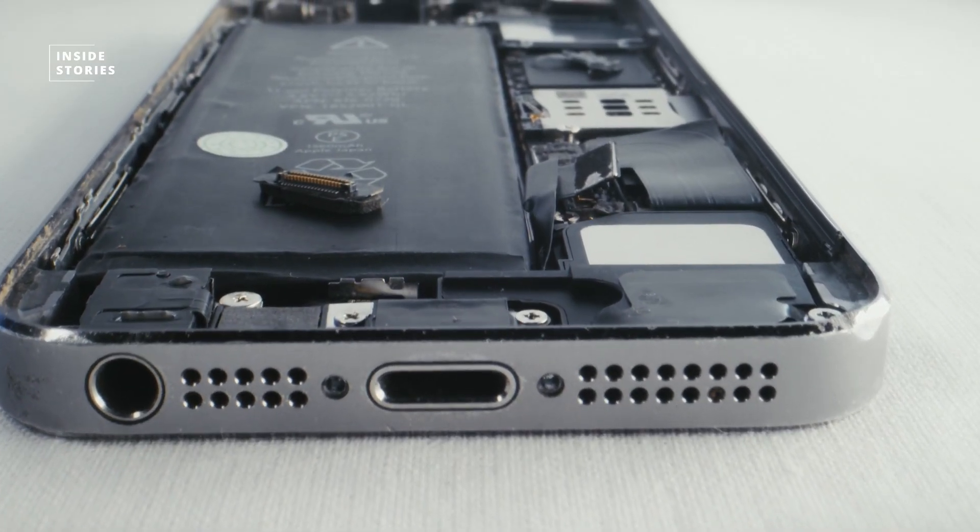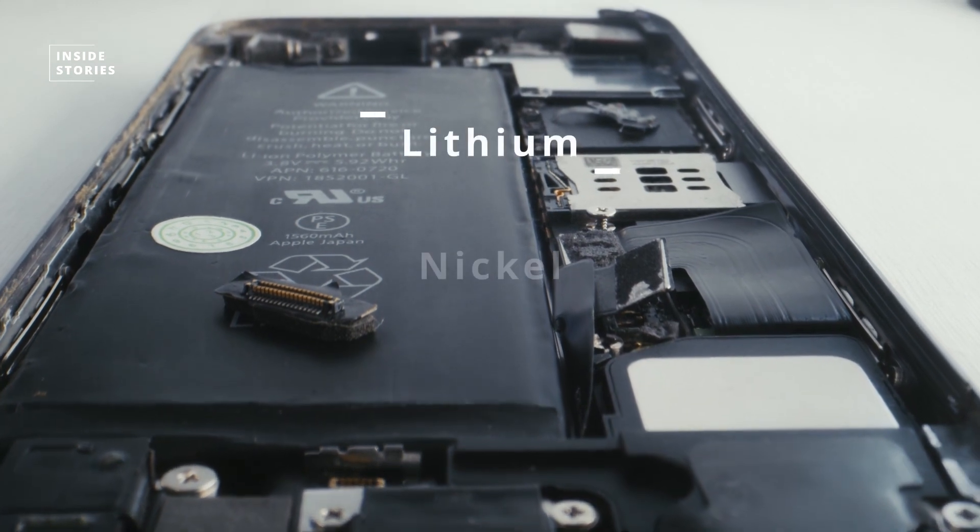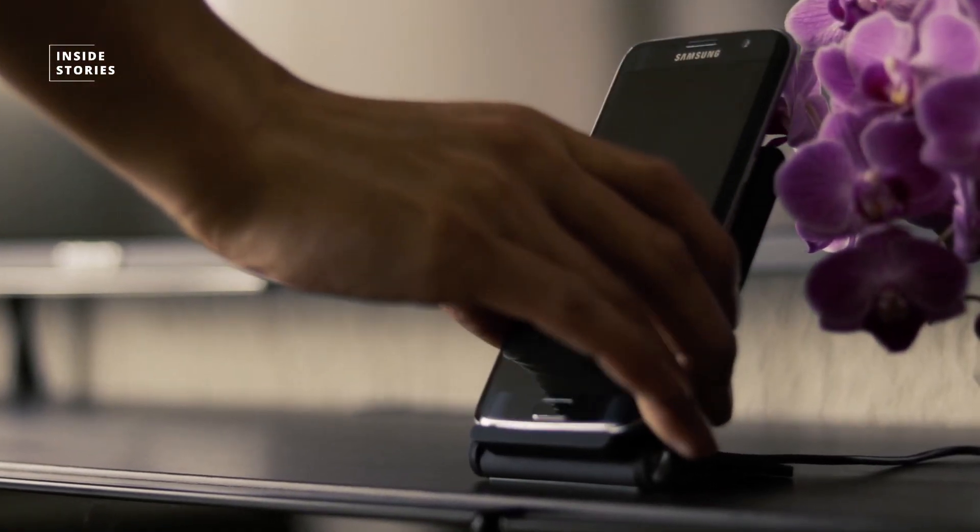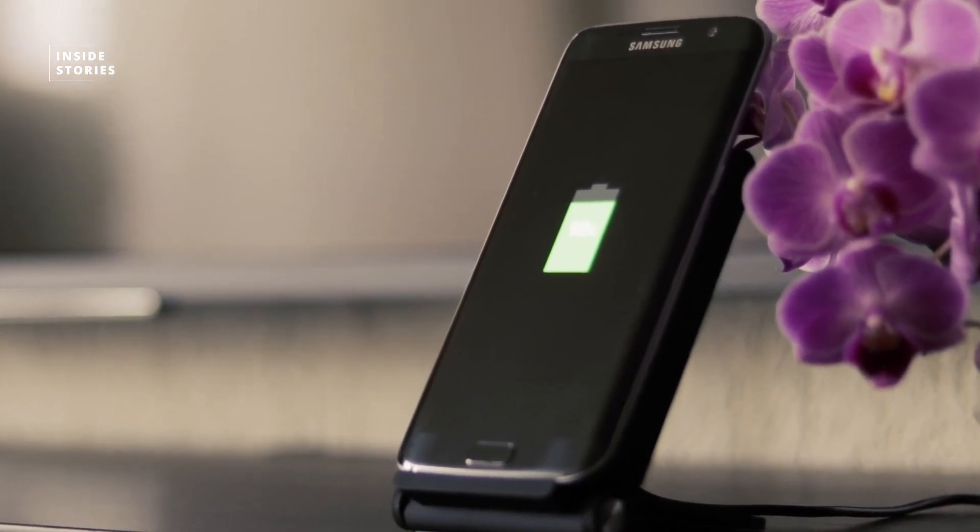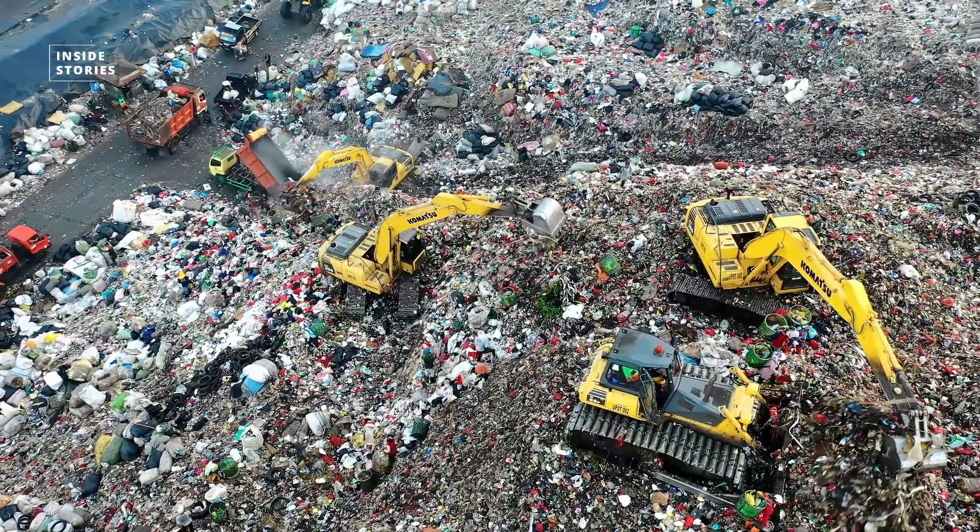Batteries today mostly consist of expensive and problematic raw materials such as lithium, nickel or cobalt. And the polypropylene and polycarbonate separators which are widely used in lithium-ion batteries take hundreds or thousands of years to degrade and add to environmental pollution.